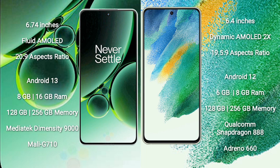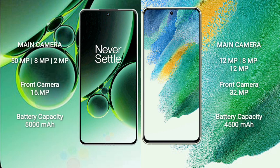OnePlus Nord 3 comes with 8GB or 16GB RAM and 128GB to 256GB internal storage, MediaTek Dimensity 9000 processor and GPU Mali-G710. Samsung Galaxy S21 FE comes with 6GB or 8GB RAM and 128GB to 256GB internal storage, Qualcomm Snapdragon 888 processor and GPU Adreno 660.